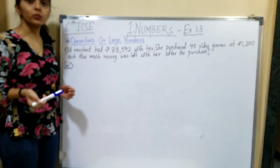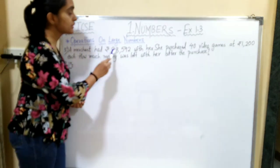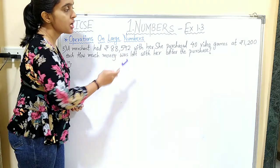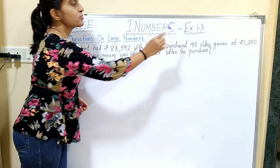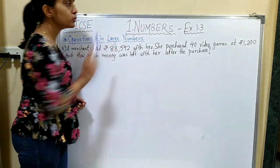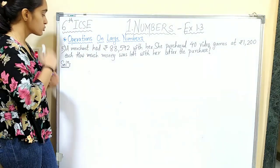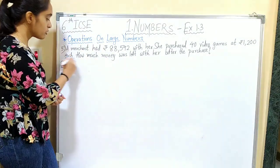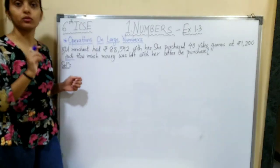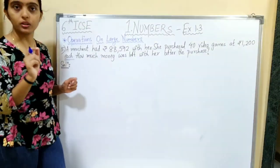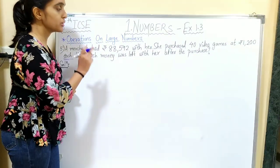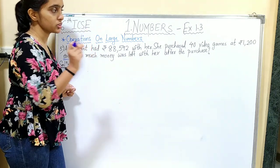The next question: a merchant had Rs. 88,592 with her. She purchased 40 video games at Rs. 1,200 each. The cost of one video game was Rs. 1,200 and in total she purchased 40 video games. How much money was left with her after the purchase?